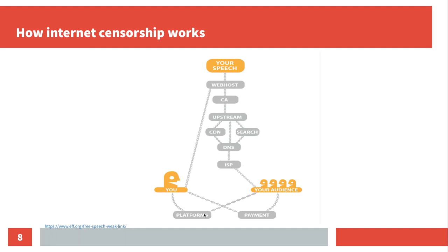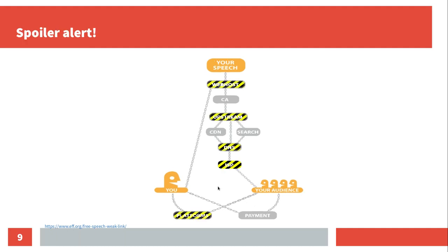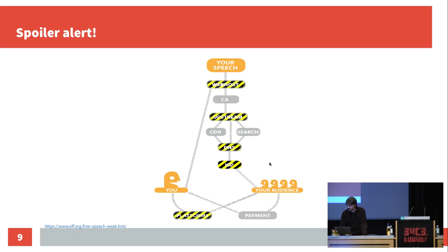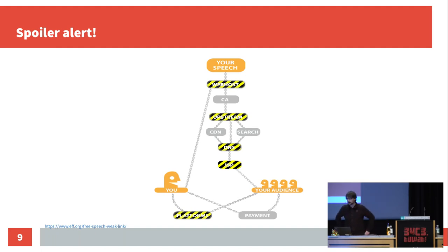As a small spoiler: I've marked all the places where censorship did happen in the Catalan referendum — in the web host, ISP, DNS, and upstream. Upstream means smaller ISP providers which use infrastructure of bigger ones can also be affected by censorship if the bigger ones start to censor. We'll see now how this was done.